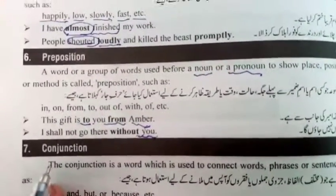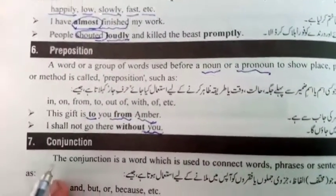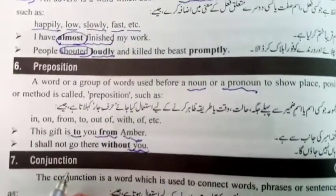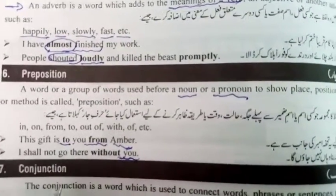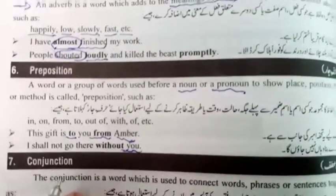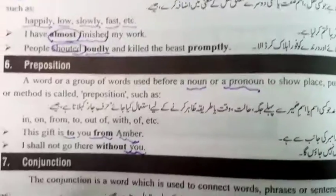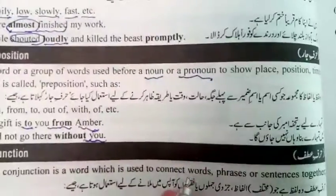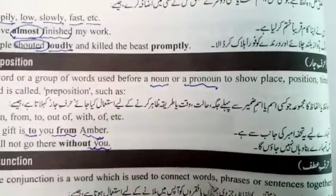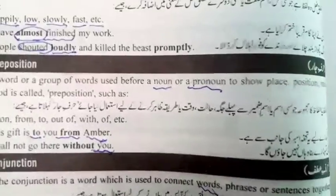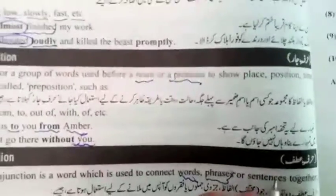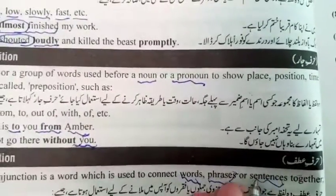Our seventh part of speech is conjunction. Conjunction is used for joining two different sentences together. A conjunction is a word used to connect words, phrases, or sentences together. For example: